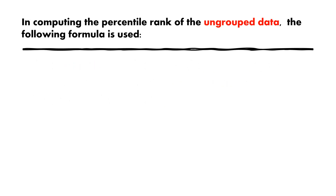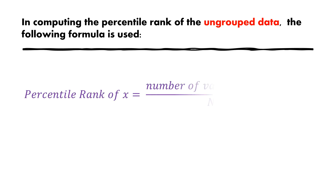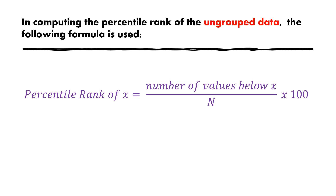In computing the percentile rank of ungrouped data, the formula to be used is: the percentile rank of the score being asked is equal to the number of values below the given score, divided by the total number of data or scores, times 100.